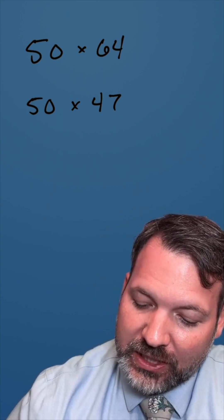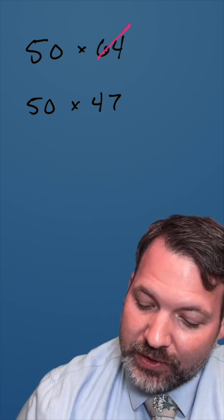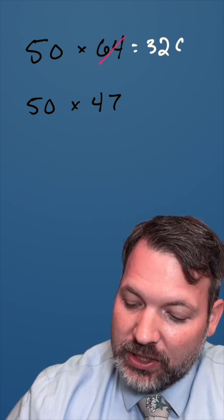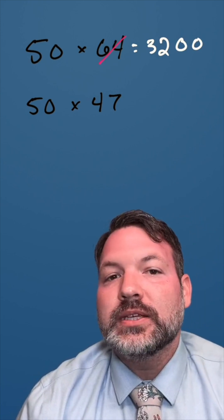Take a look at something like 50 times 64. Take half of 64, that is 32. There is no remainder, and so add two zeros. 50 times 64 is 3,200.